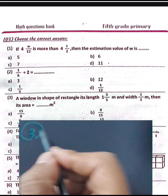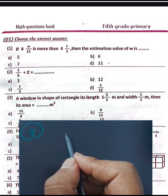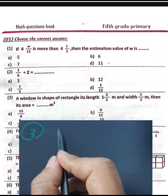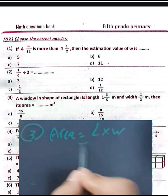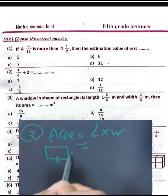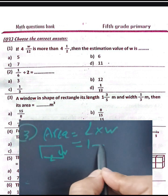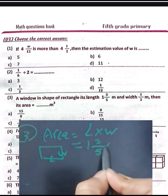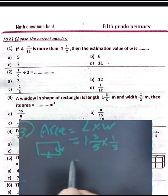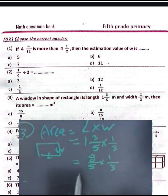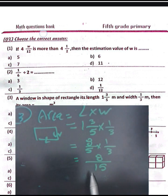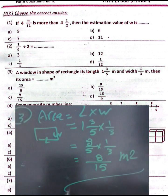Question number three: a window in the shape of a rectangle. Find the area. Area equals length times width. Length is one and three fifths, width is one third. Convert: one and three fifths equals eight fifths. Then eight fifths times one third equals eight over fifteen square meters.